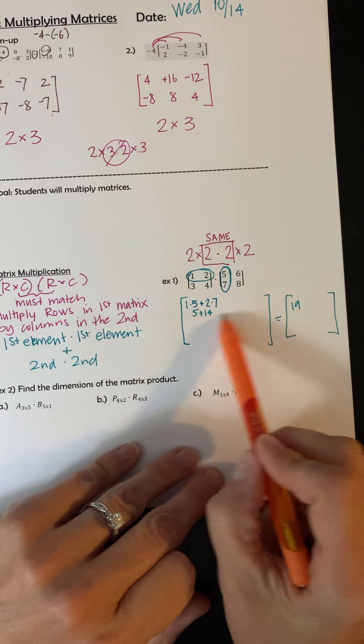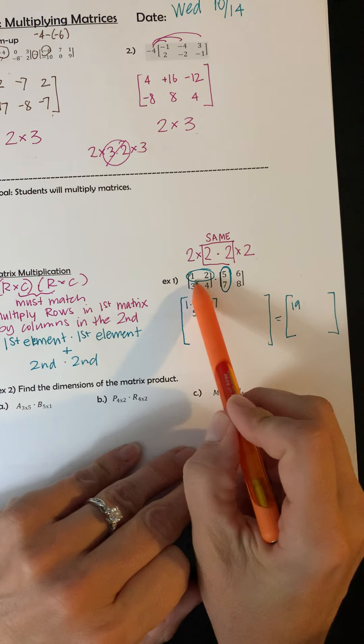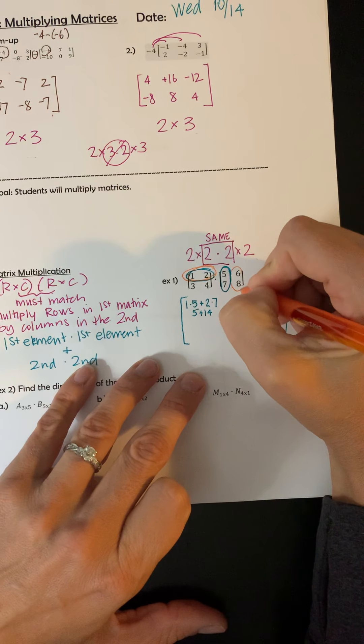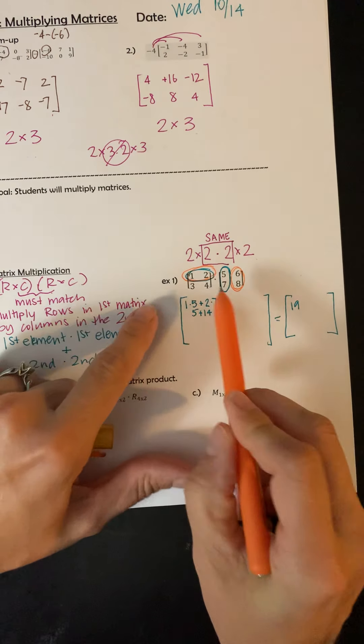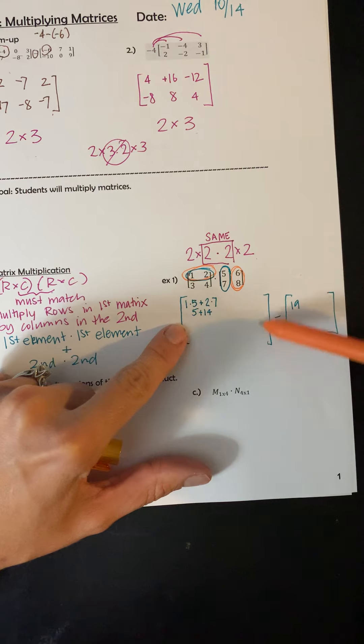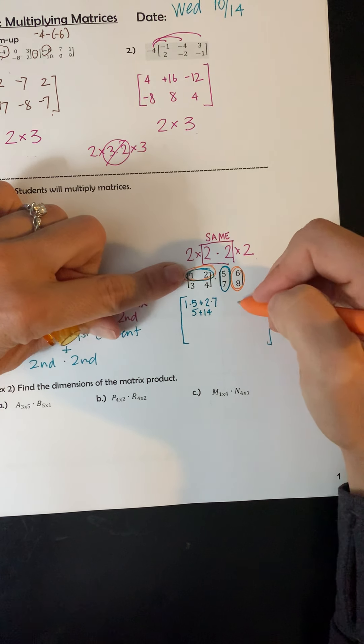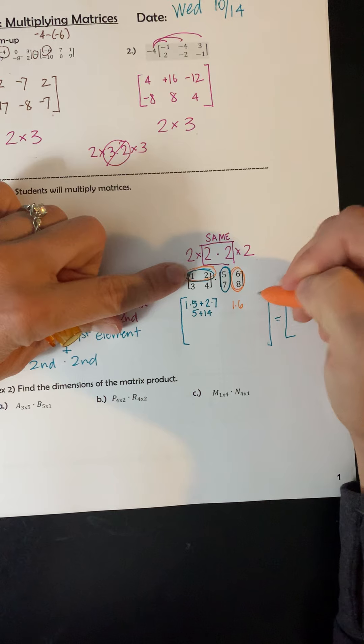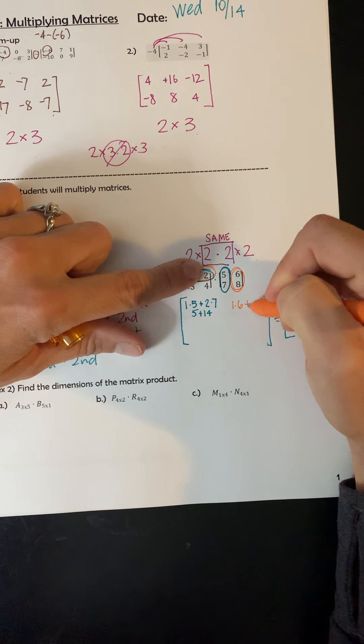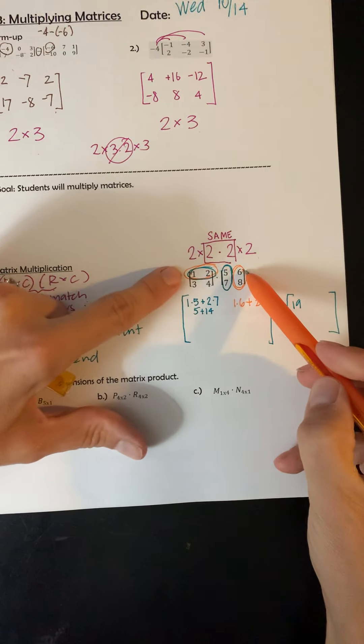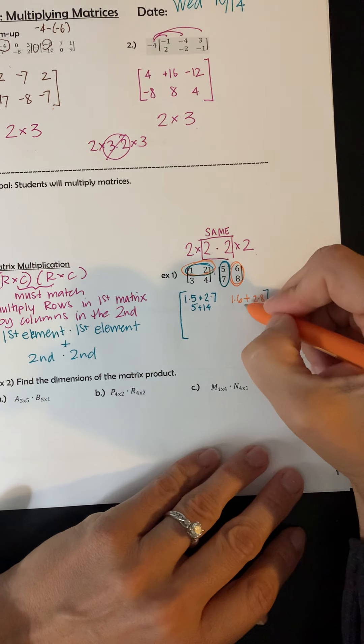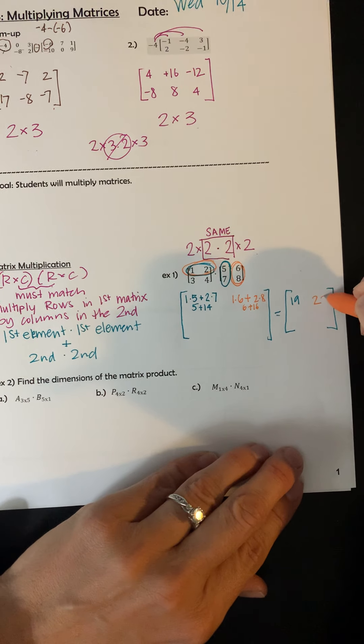Now, we're going to work our way across the top. So if I'm still in the top row, I'm still in the top row up here. So this now is going to get multiplied by that. So first row now times the second column. So we're still in the first row, but now we're in the second column. So 1 times 6 and then 2 times 8. And I'm going to add them. So again, first times first plus second times second. And this is going to be 6 plus 16. So this is going to be 22.